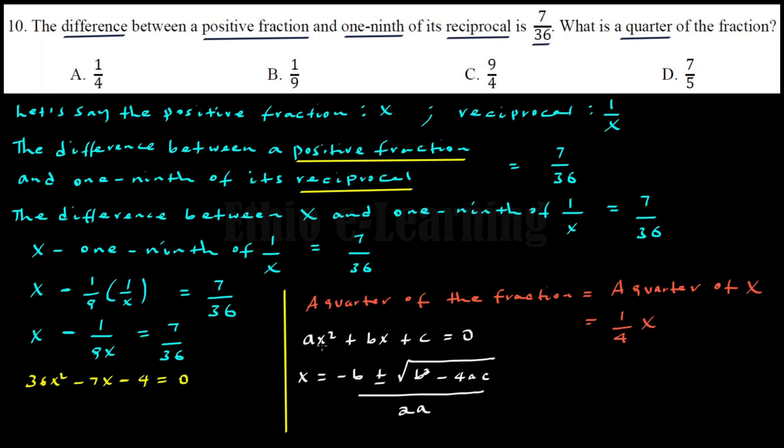In this quadratic equation, the coefficients are: a equals 36, b equals negative 7, and c equals negative 4. Substituting these values into the formula, we get x equals 4 over 9 and x equals negative 1 over 4.